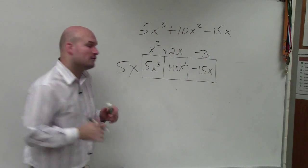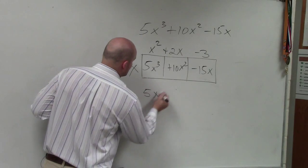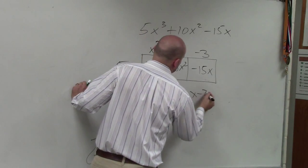Negative 3. So therefore, my factored form is 5x times x squared plus 2x minus 3.